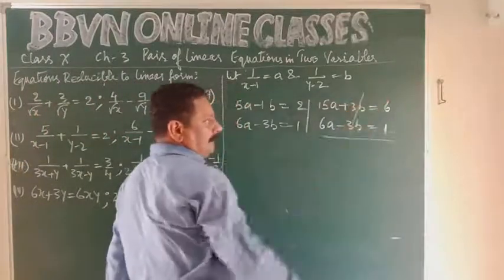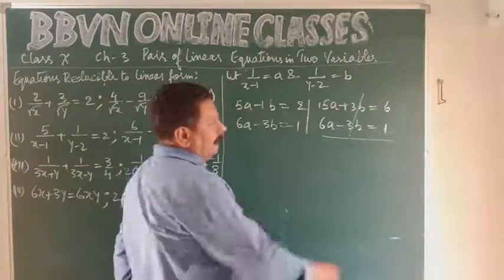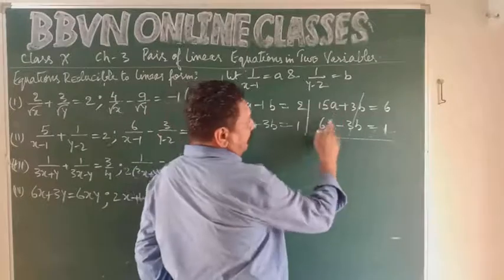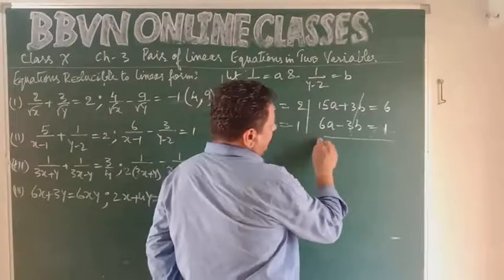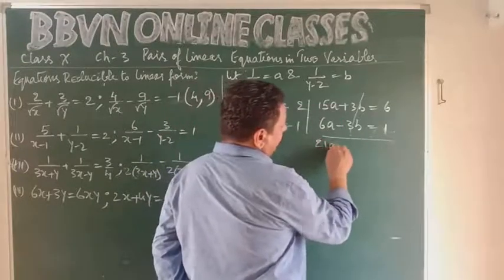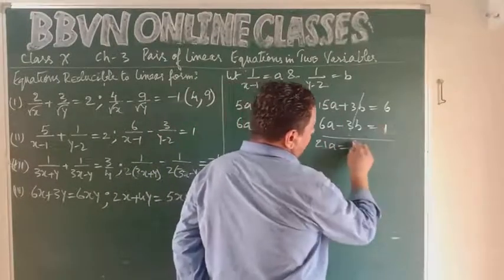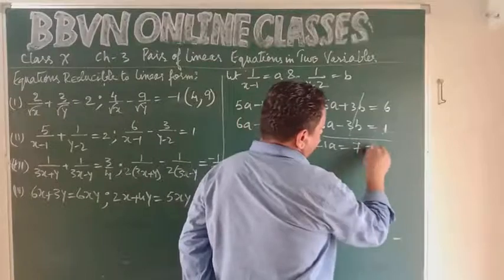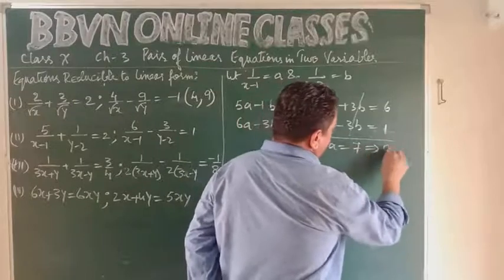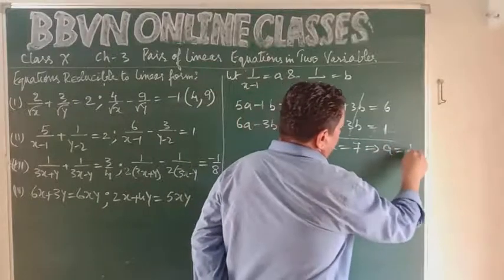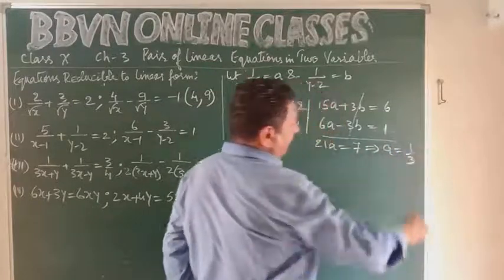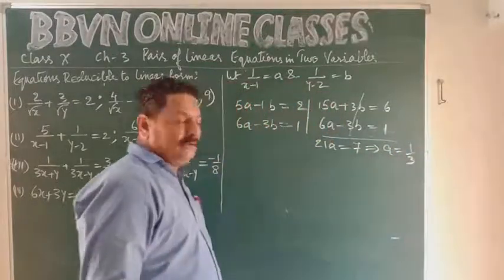Since the B terms are +3B and -3B, we add the two equations. The B terms cancel. 15A + 6A = 21A, and 6 + 1 = 7. So 21A = 7, giving A = 1/3.